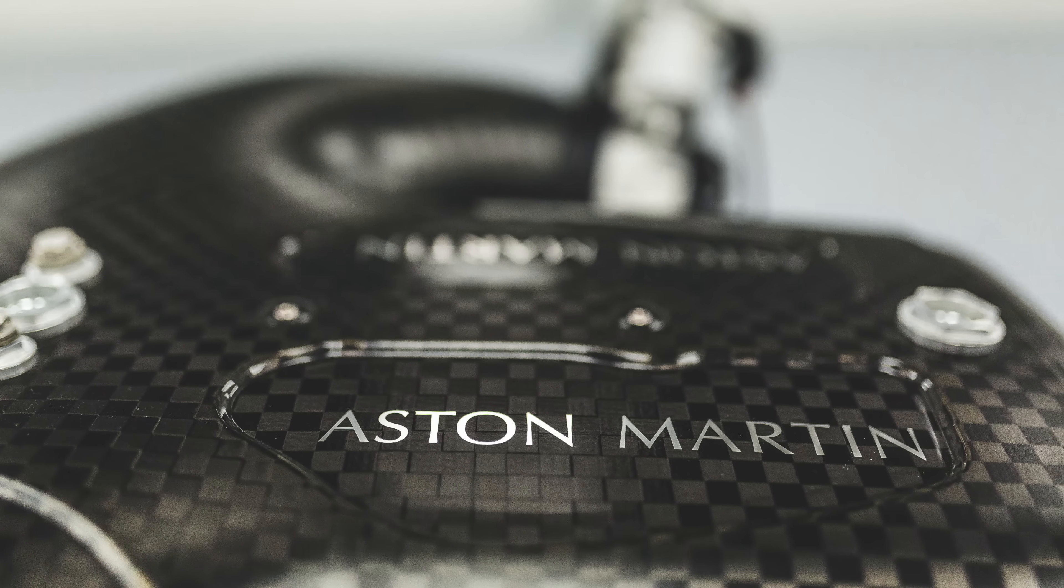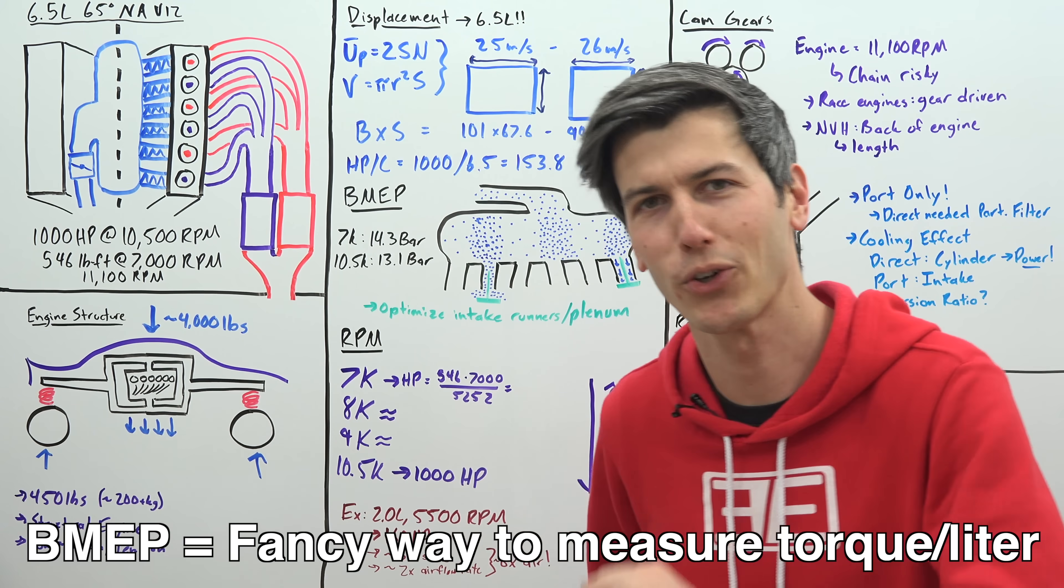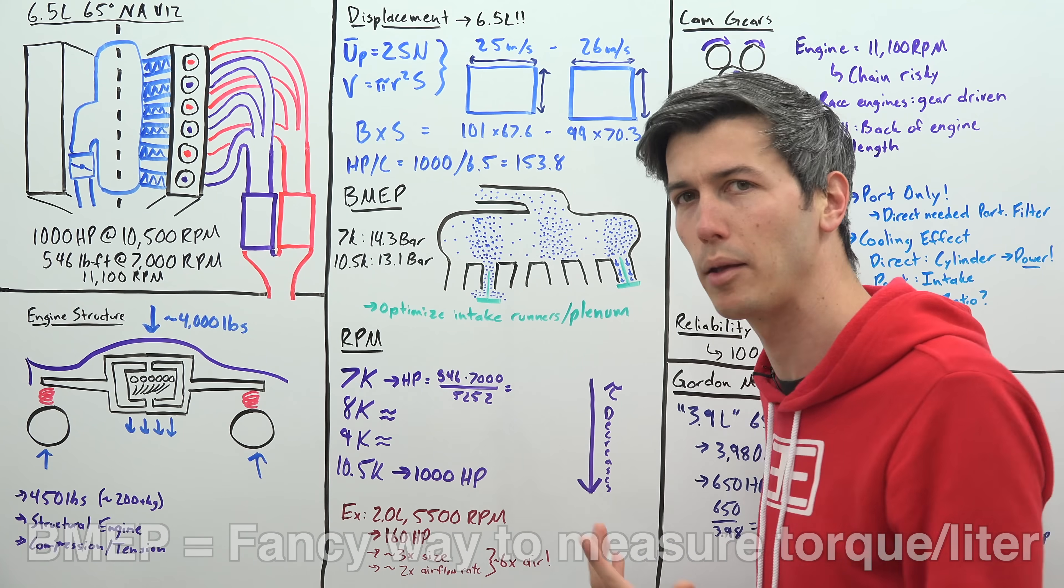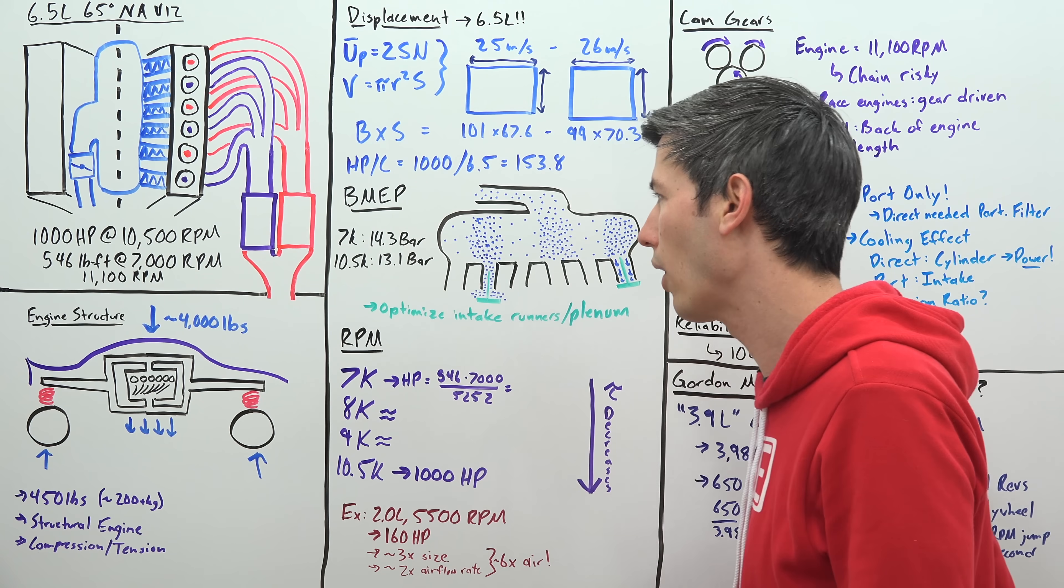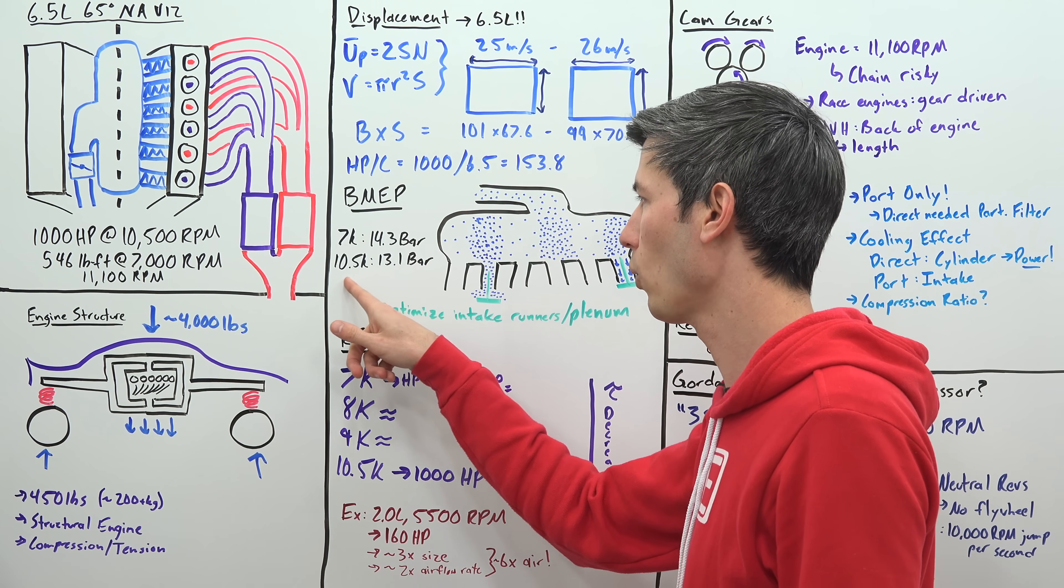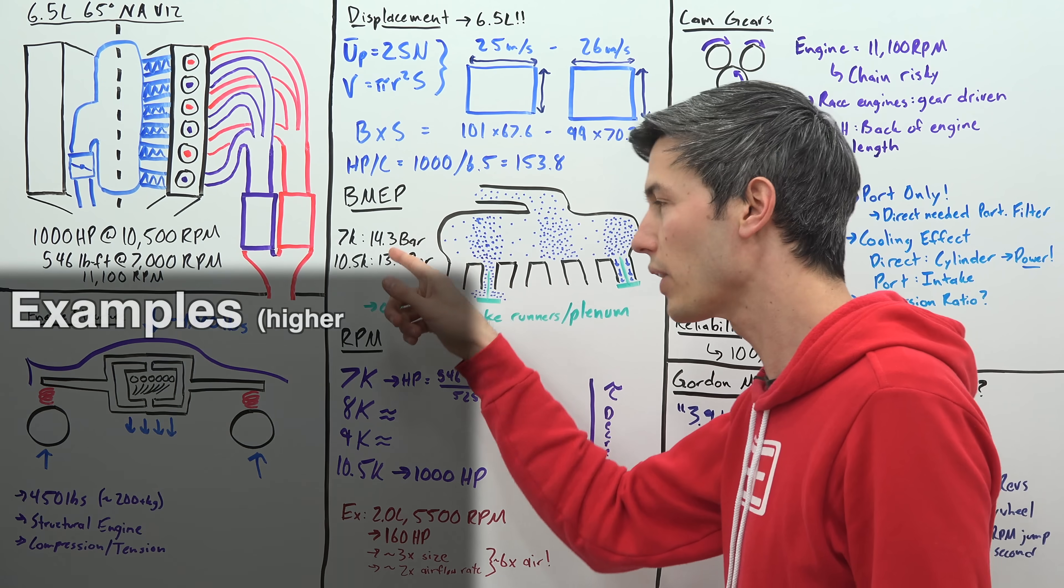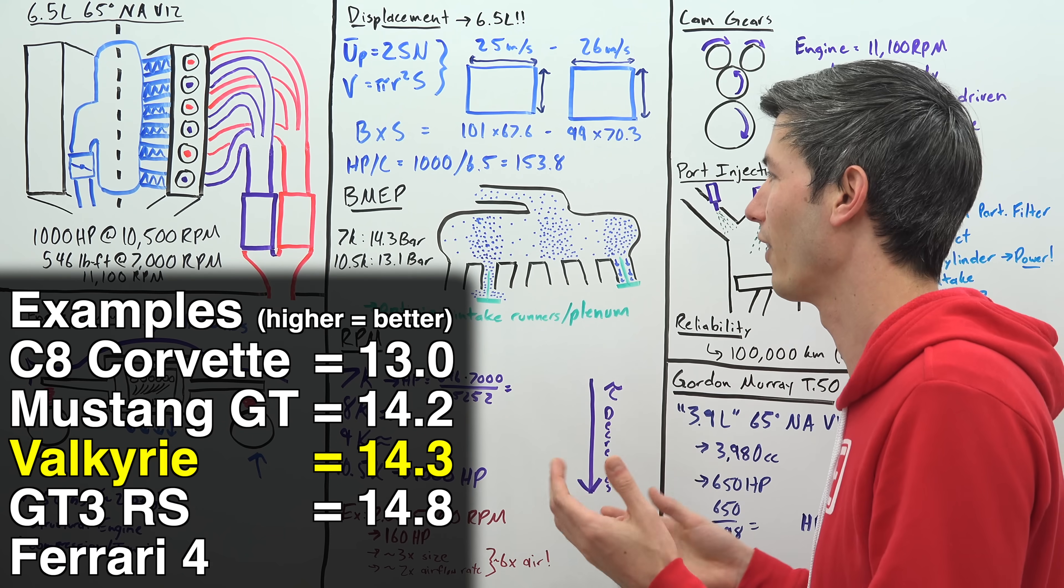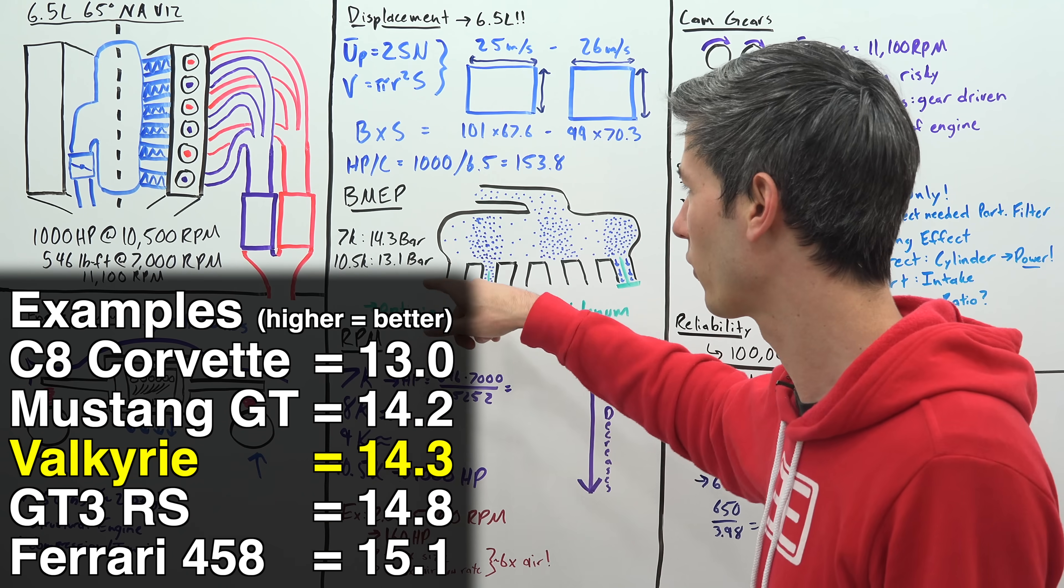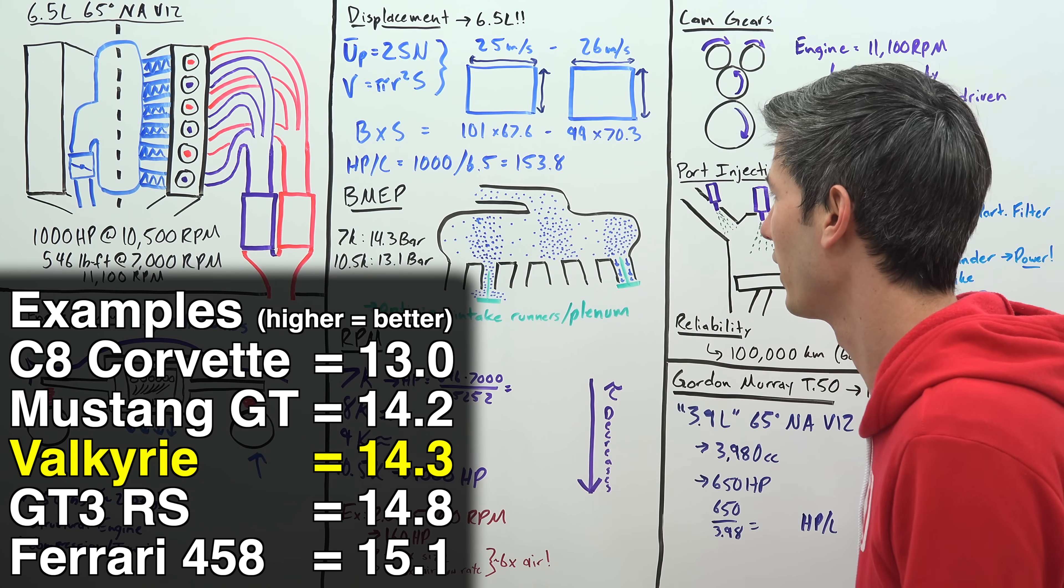Next let's get into brake mean effective pressure. Now if you haven't yet watched my video on brake mean effective pressure I'd highly recommend doing so. But ultimately we're looking at this vehicle here has a peak BMEP of 14.3 bar at 7,000 rpm and that comes down to about 13.1 at its peak power which is at 10,500 rpm. And 14.3 is very good but it's nothing unheard of so you know it's not like this engine is breaking any laws out there, it's well within normal regions for a good naturally aspirated engine.